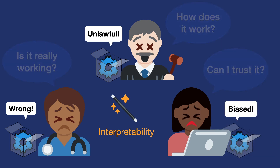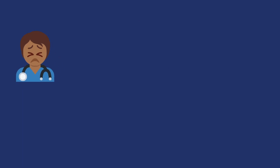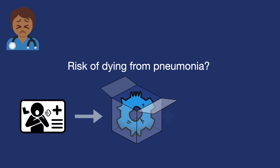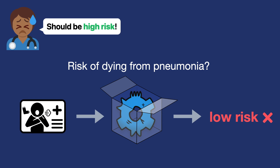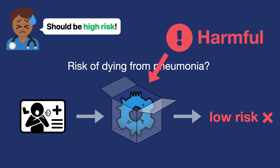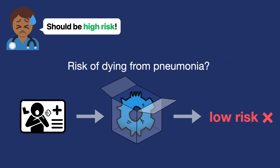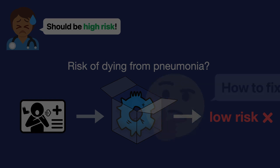For example, doctors have trained machine learning models to predict the patient's risk of dying from pneumonia. Surprisingly, many state-of-the-art models predict patients with asthma have lower risk than non-asthmatic patients. This pattern is against doctors' knowledge and experience, and it can cause serious harms if we deploy these problematic models in real life. Interpretability helps us discover these dangerous patterns, but how can we fix them?